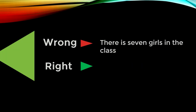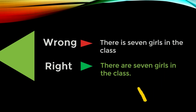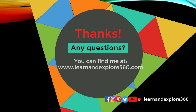'There is seven girls in the class' — we don't use 'is' because we're already talking about seven girls, which is plural. The correct form is: 'There are seven girls in the class.'